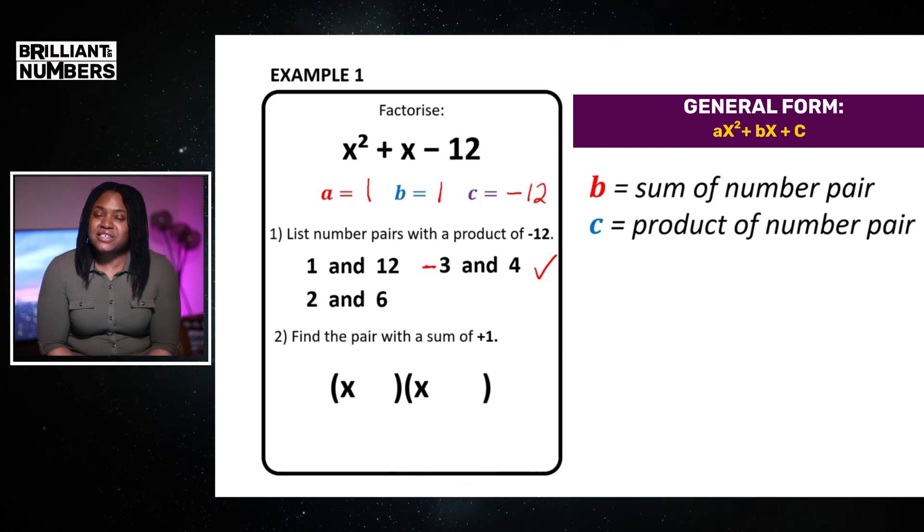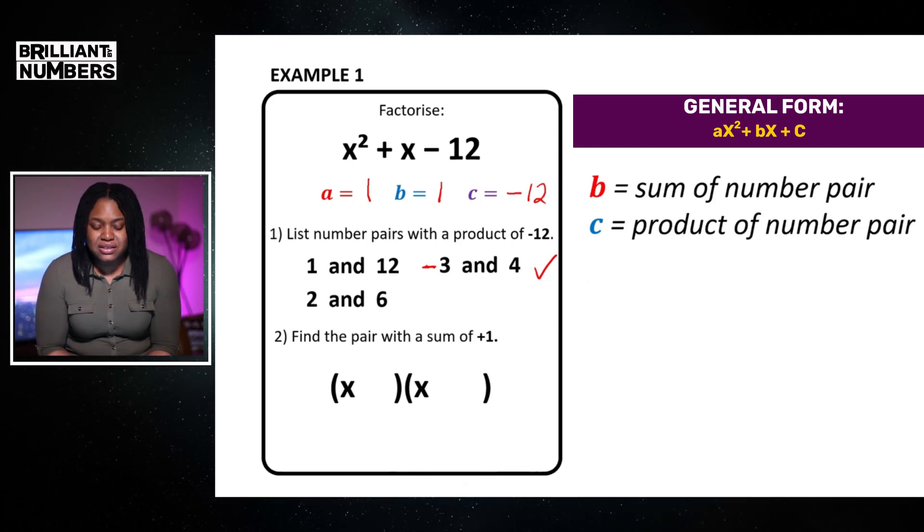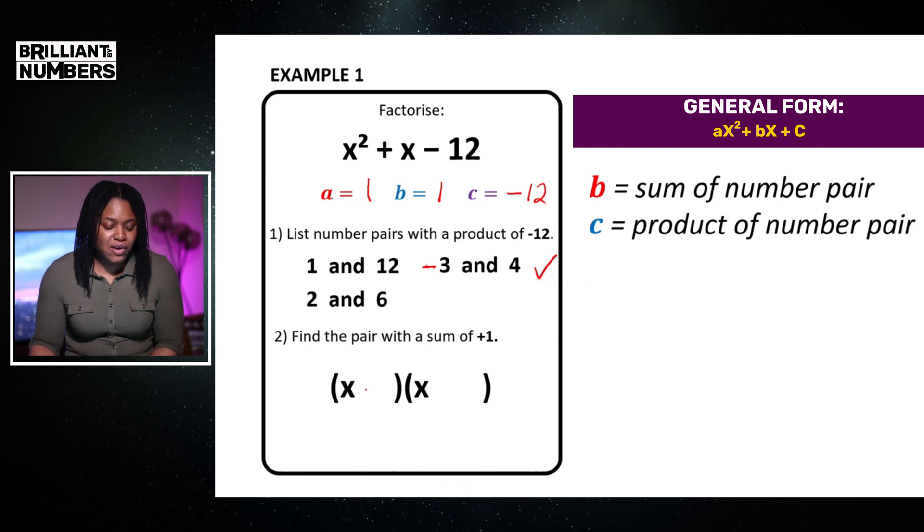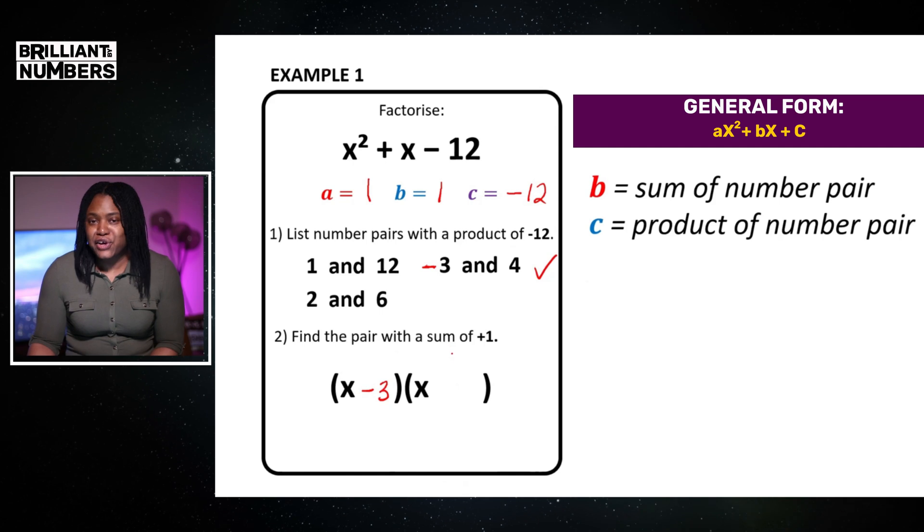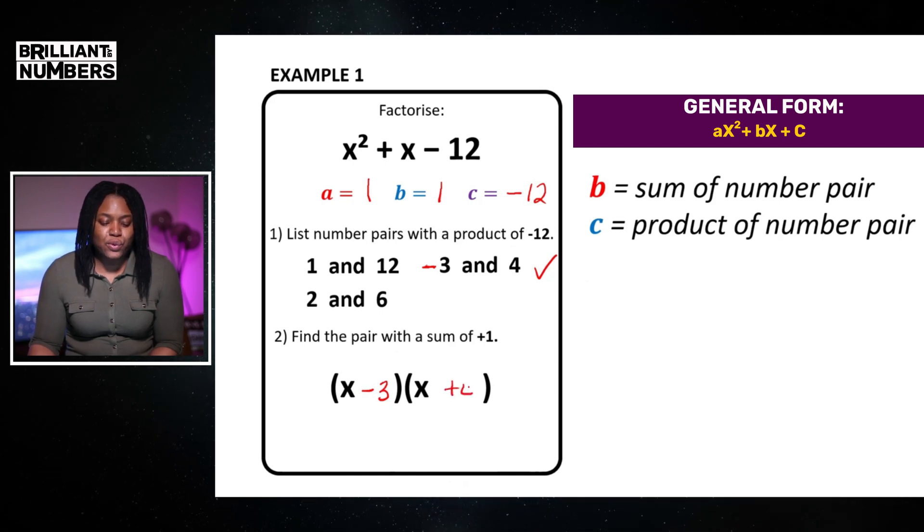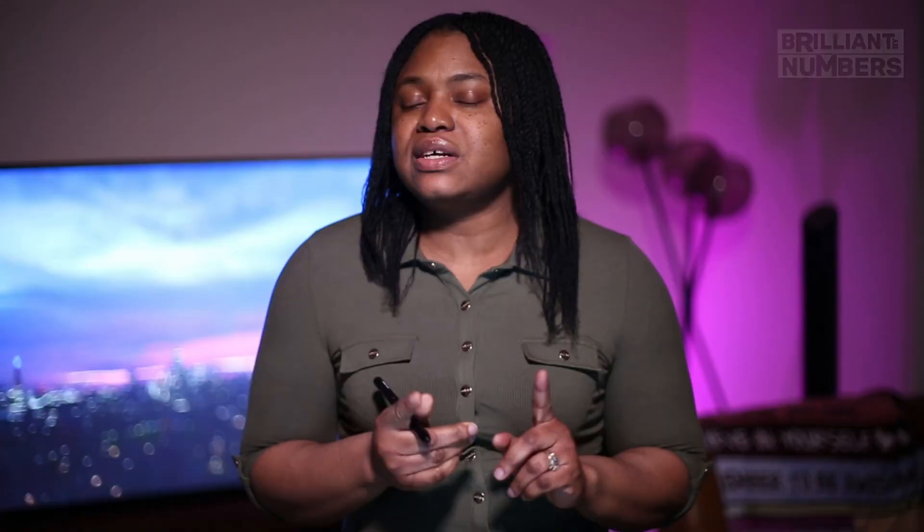So, now, I just need to put them in my brackets. So, one of my pair will be x minus 3 and the other will be x add 4. And in our previous video, we have discussed that we could also prove our answer by expanding the brackets. Again, if you don't remember how to expand your brackets, you can check out the first video in our series.